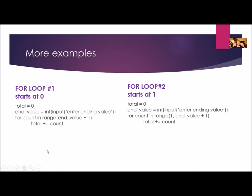Let's look at some more examples. This first loop starts at zero — I just have one argument in the range function, which is my ending value plus one, because I want to include the ending value. So if my ending value is five, I'm going to go zero, one, two, three, four, five.